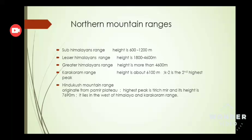After this is the Karakoram range, with a height of about 6100 meters, and K2 is the second highest peak of this range. The last mountain range of the northern mountain ranges is the Hindukush mountain range. This mountain range originates from the Pamir Plateau. Its highest peak is Tirich Mir and its height is 7690 meters. It lies to the west of the Himalaya and Karakoram range.